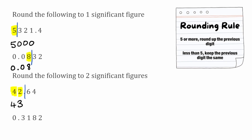For this next example, again rounded to two significant figures, the first significant figure would be our first non-zero digit which would be three, meaning one would be the second significant figure. We draw our line and determine whether the one will stay as a one or round up to a two. We look to the right-hand side of our line — we have an eight — so we're going to round up the previous digit. Copying this number underneath: zero point three, and then the one rounded up to a two. Our final answer would be 0.32.